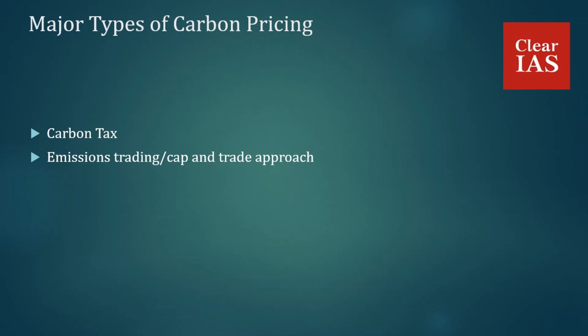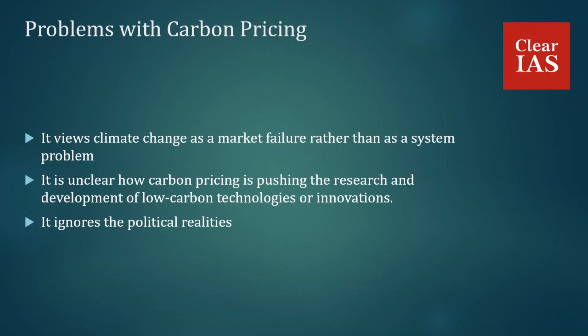Although many economists believe carbon pricing is the way forward to address climate change, some argue against this approach. One argument is that carbon pricing views climate change as a market failure rather than a systemic problem. Climate change is framed as the consequence of a market failure that can be rectified by placing a price on carbon, so that actors pay for the social cost of their carbon-intensive activities. Critics argue this fails to see the climate change problem in its entire depth, and that fundamental changes to systems are needed.